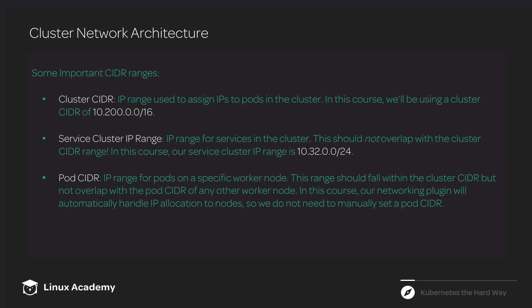The second IP range that we need to set aside is the service cluster IP range. The cluster CIDR is used to allocate IP addresses to pods, while the service cluster IP range is used to allocate IP addresses to services. Our service cluster IP range is 10.32.0.0/24. Both of these ranges are the same ones used in the original Kubernetes the Hard Way guide — we're using them to keep this course as similar as possible to that guide. This is a virtual network, so we could have picked different ranges, but these are the ones we're using for this course.